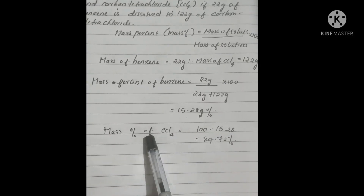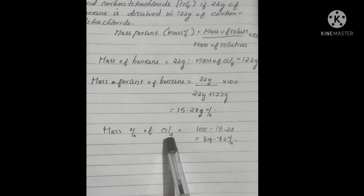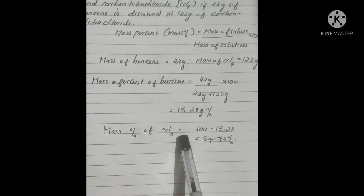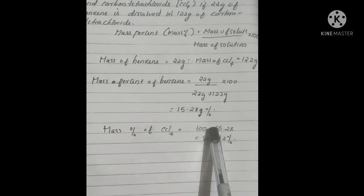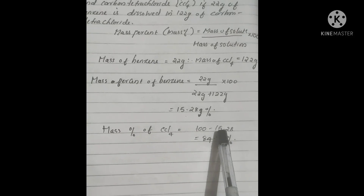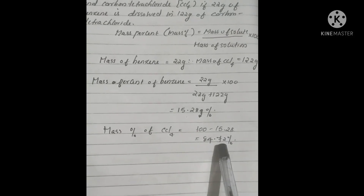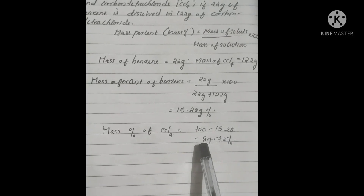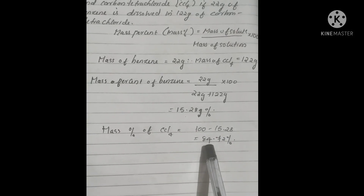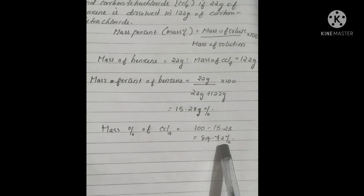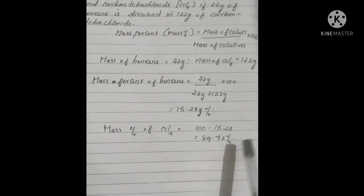Then mass percentage of carbon tetrachloride equals 100 minus 15.28, which equals 84.72%.